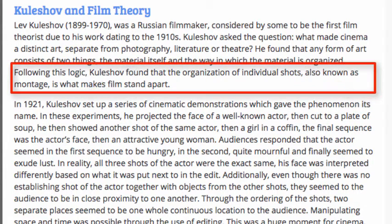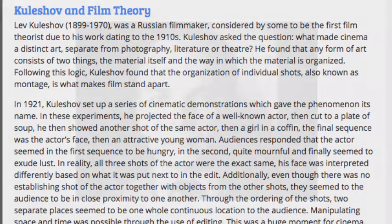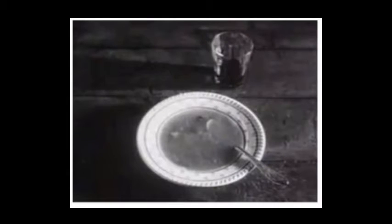Following this logic, Kuleshov found that the organization of individual shots, also known as Montage, is what makes film stand apart. In 1921, Kuleshov set up a series of cinematic demonstrations which gave the phenomenon its name. In these experiments, he projected the face of a well-known actor, then cut to a plate of soup. He then showed another shot of the same actor, then a girl in a coffin.